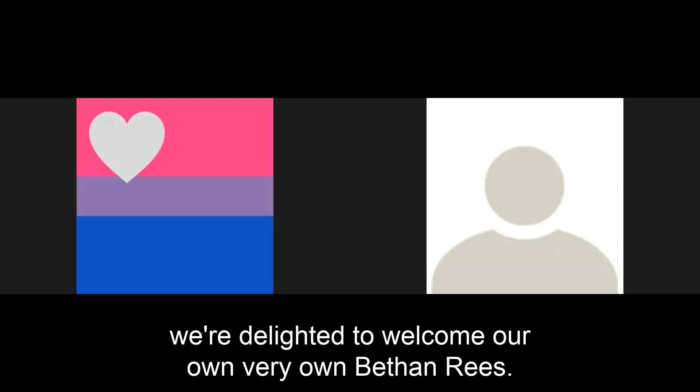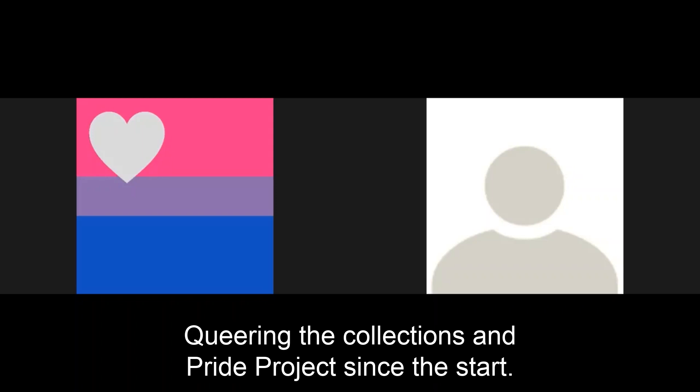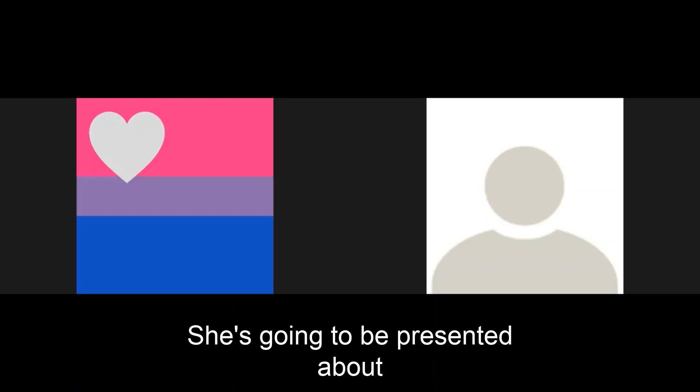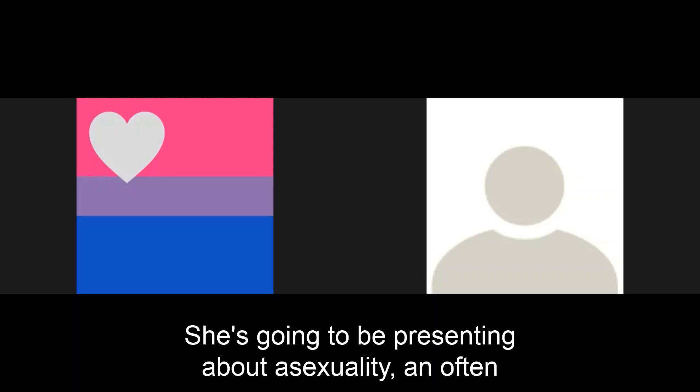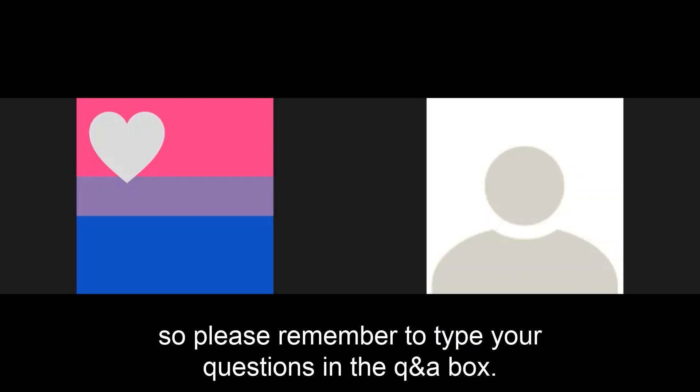For our final presentation, we're delighted to welcome our very own Bethan Rees. Bethan has been working with Ancient House since she was in primary school and she's been part of Junior History Club, creating the collections and Pride projects since the start. She's going to be presenting about asexuality, an often overlooked part of LGBTQ+ history. After the presentation, Bethan will be answering questions, so please remember to type your questions in the Q&A box. Over to Bethan.